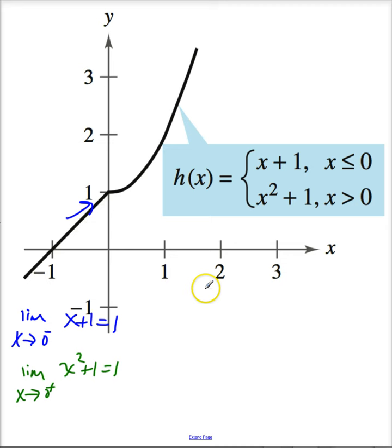So the limit exists. But what is h evaluated at x equals 0? That is 0 plus 1 or 1. So all three conditions are met. This is continuous over all reals.